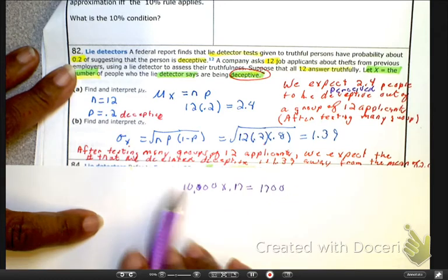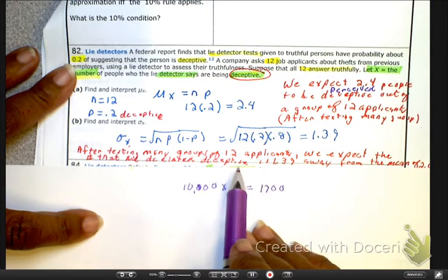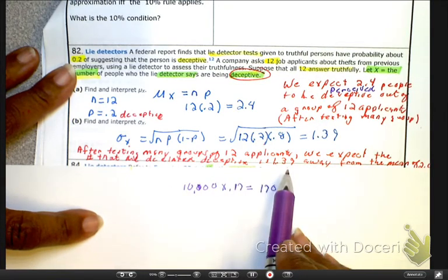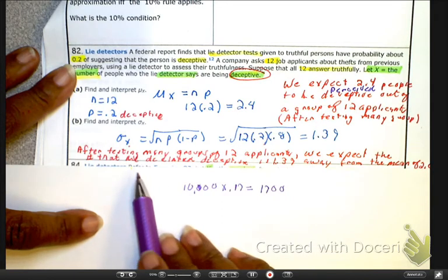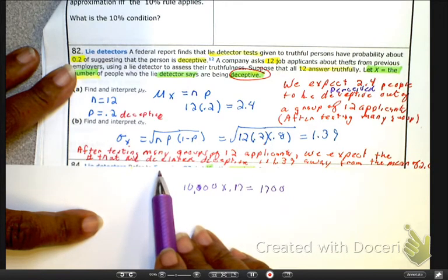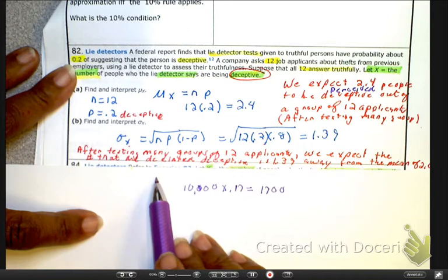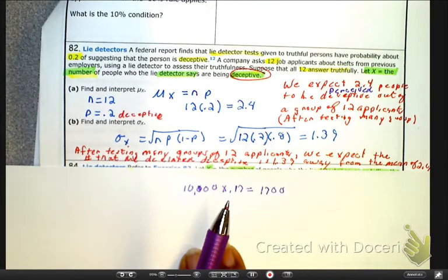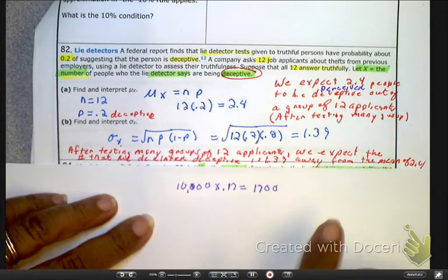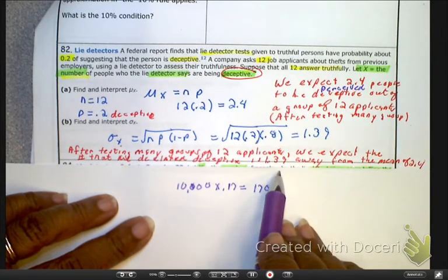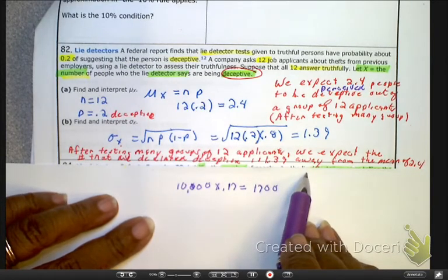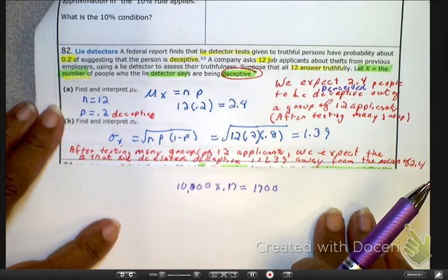And what does this mean? This means, after you have many groups, many groups of 12 applicants, we're expecting that there is going to be a variability of approximately 1.3 away from the mean, typically, when we're trying to see who was declared deceptive or not.